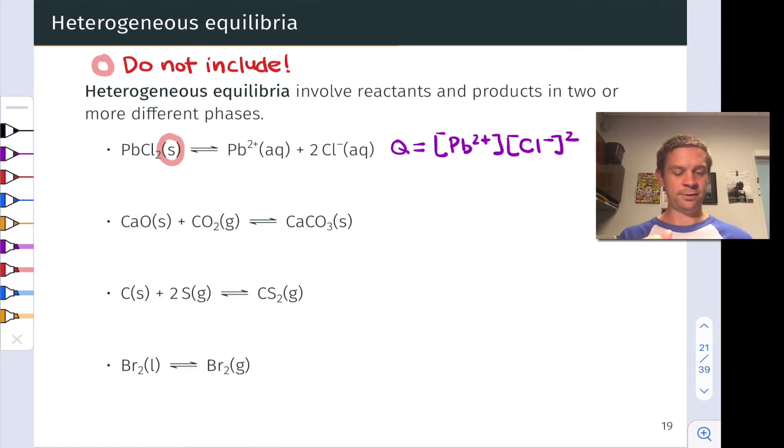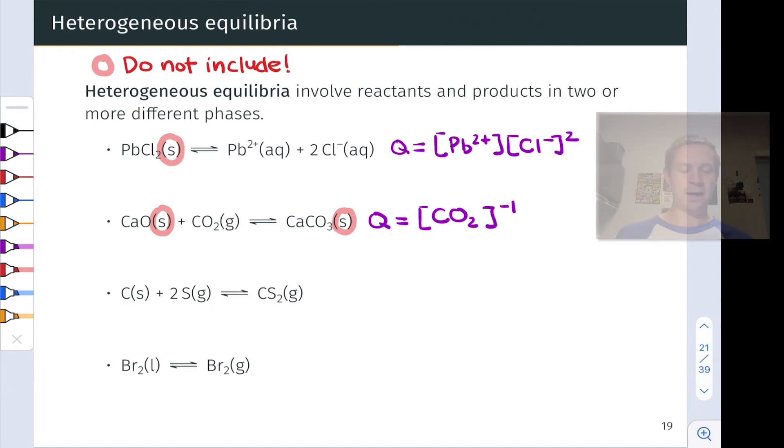In the second case, we have a solid on the left-hand side, calcium oxide, reacting with CO2 gas to form solid CaCO3. So those two solids do not appear in the reaction quotient, and Q is equal to 1 over the molarity of CO2, or CO2 molarity to the negative 1 power there.